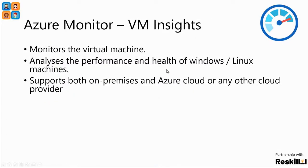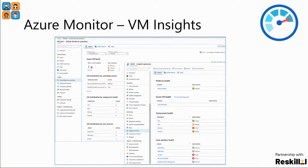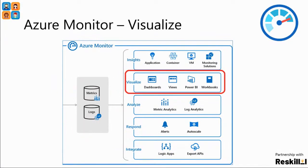The next one is virtual machine insights. Azure Monitoring Services can be used to monitor virtual machine performance, and it analyzes both Windows and Linux machines. It even supports collecting data from on-premises as well as Azure systems. We have to use log agents to get data from on-premises machines. Once we have insights from applications or virtual machines, we want to see them in a visualized format — we can generate dashboards, views, Power BI reports, or workbooks to generate visualizations.